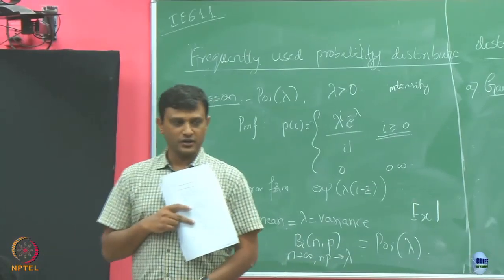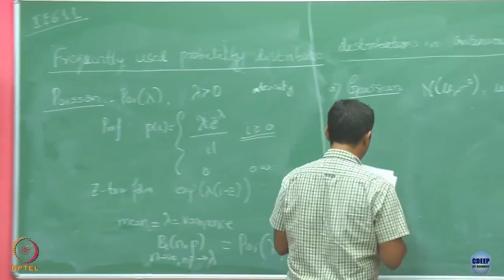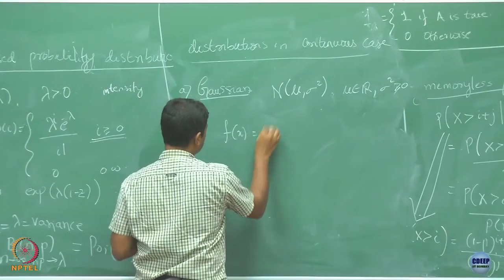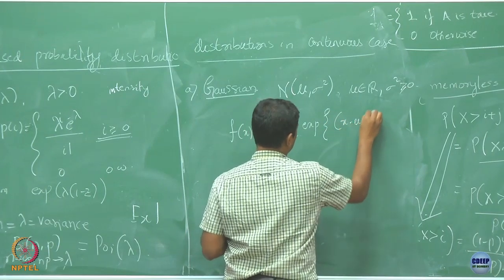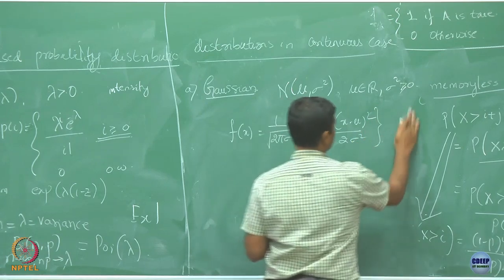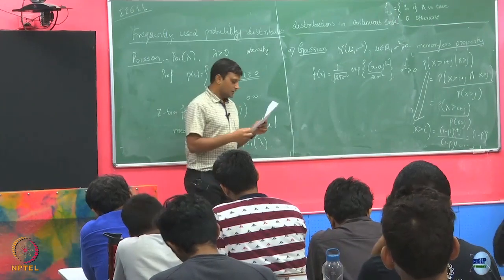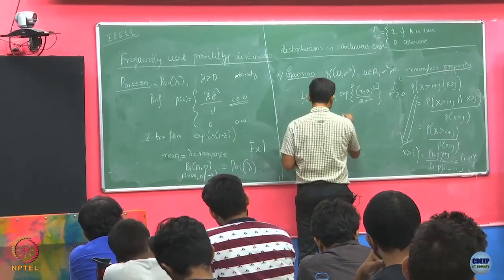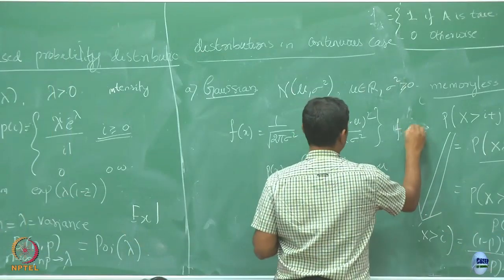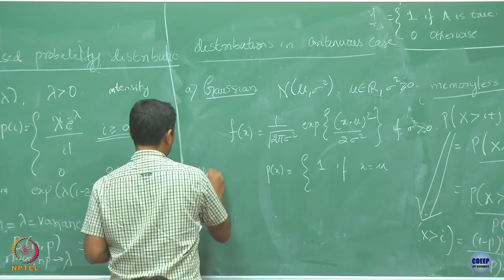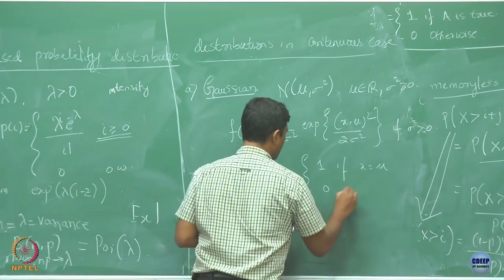We are talking about a continuous random variable, so we are going to define the probability density function. For a Gaussian random variable, the density is defined for x, provided sigma square is strictly greater than 0. If sigma square equals 0, it takes a degenerate format — it is simply 1 if x equals mu, and 0 otherwise.